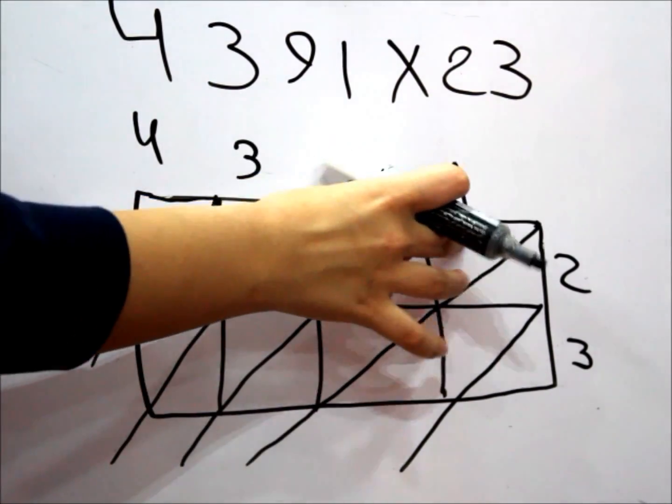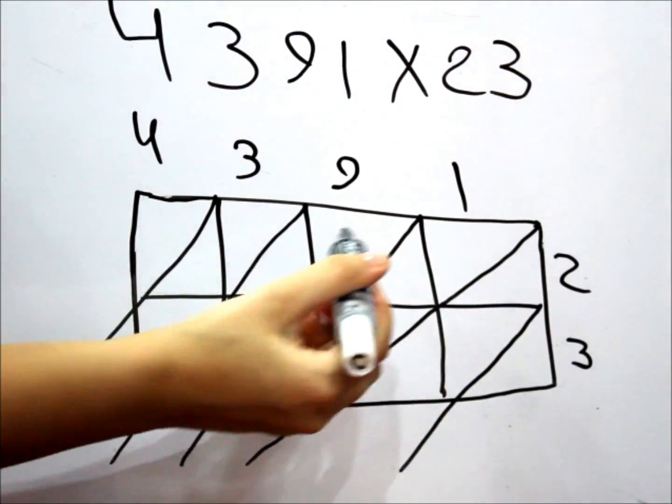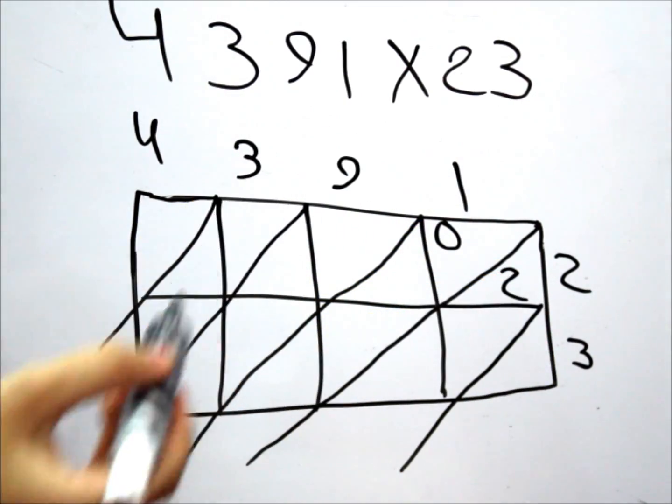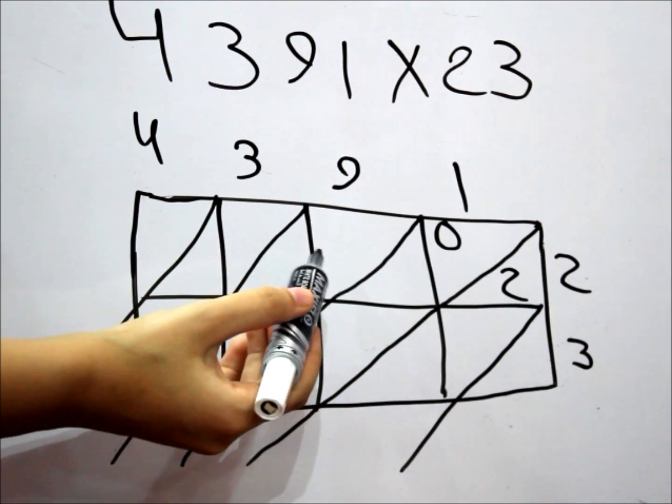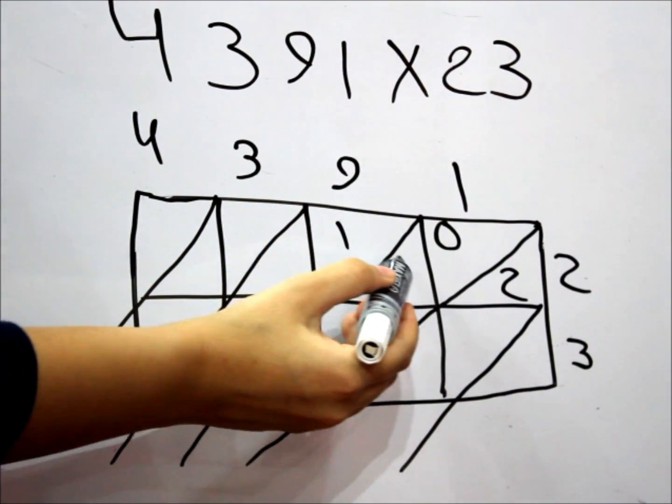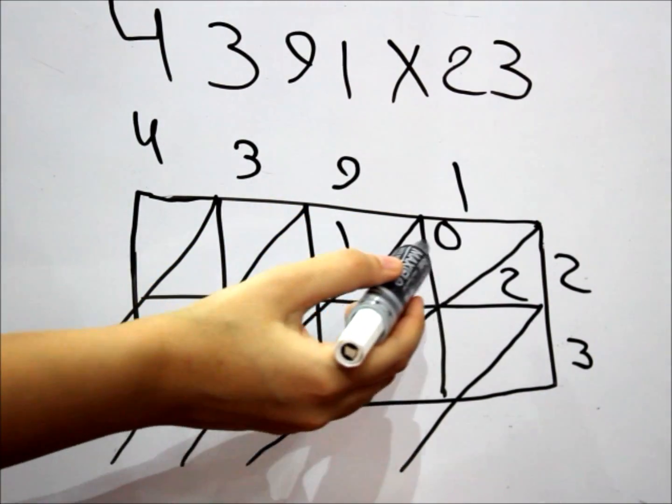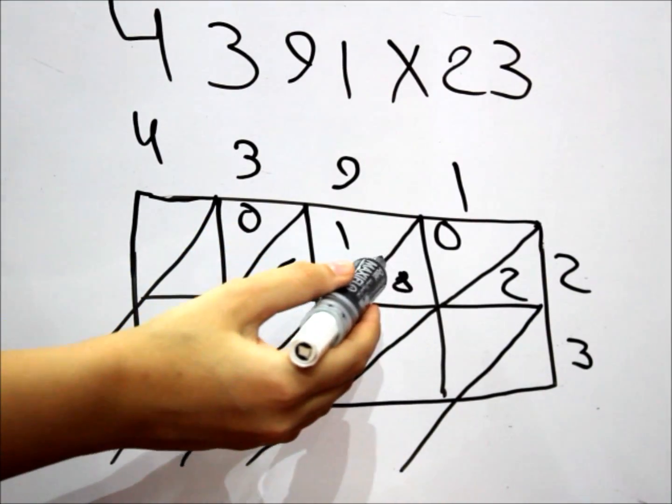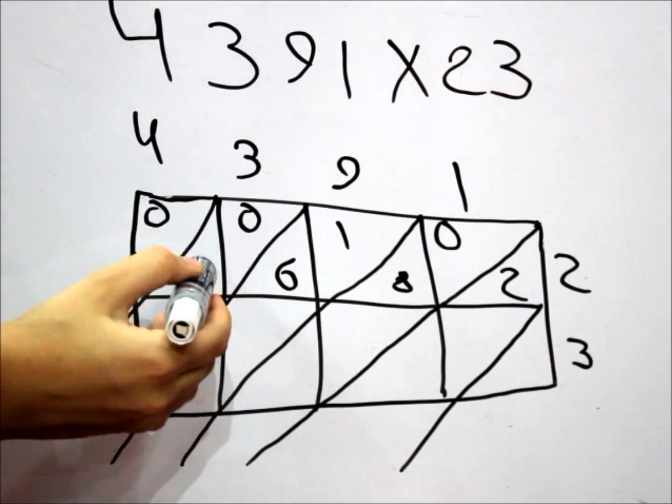So the first square over here, we have the 1 and the 2. We're going to place the 0 in here and the 2 in here. Also, we have the second square, a 2 and a 9. That would be 18. 2 by 3, the 0 and the 6. 2 times 4, 0 and the 8.